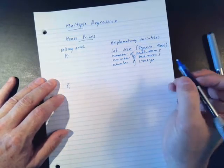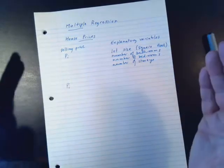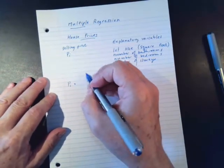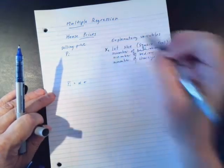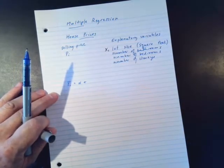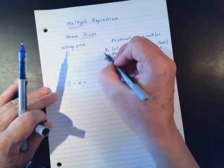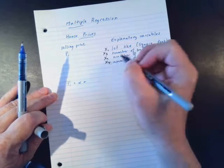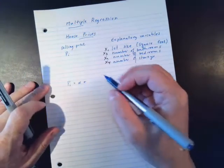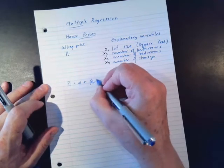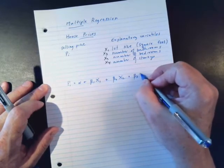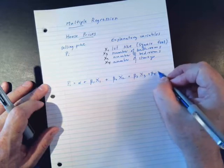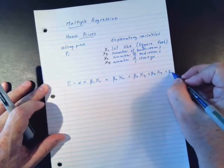We're going to construct a model — a linear equation that says the selling price of a house equals some constant, plus beta1*x1, plus beta2*x2, plus beta3*x3, plus beta4*x4, plus an error term. Here x1 is lot size/square feet, x2 is bedrooms, x3 is bathrooms, and x4 is number of stories.